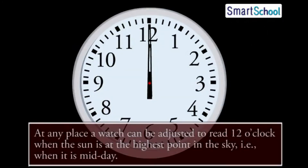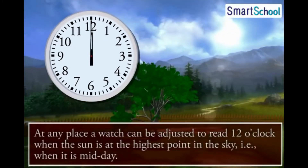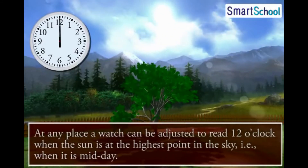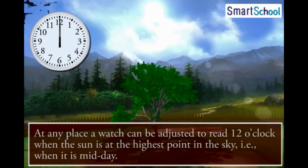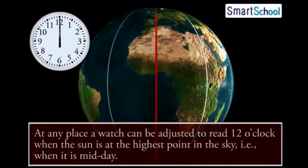At any place, a watch can be adjusted to read 12 o'clock when the sun is at the highest point in the sky, i.e. when it is midday. The time shown by such a watch will give the local time for that place. All the places on a given meridian of longitude have the same local time.